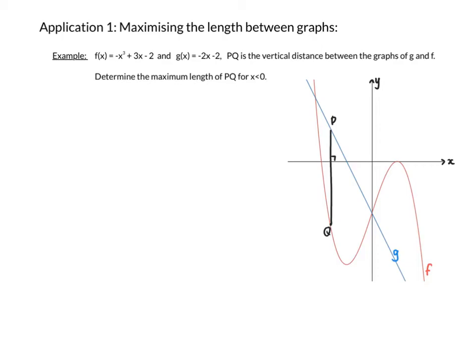Let's look at an example together. In my example, I have f, which is a cubic graph, and g, which is a straight line. PQ is the vertical distance between the two graphs. Now PQ could be on the left or the right of the y-axis, but it says that PQ is in the position where x is less than zero. So x is less than zero on the left of the y-axis, so I'm only going to use negative values for x.